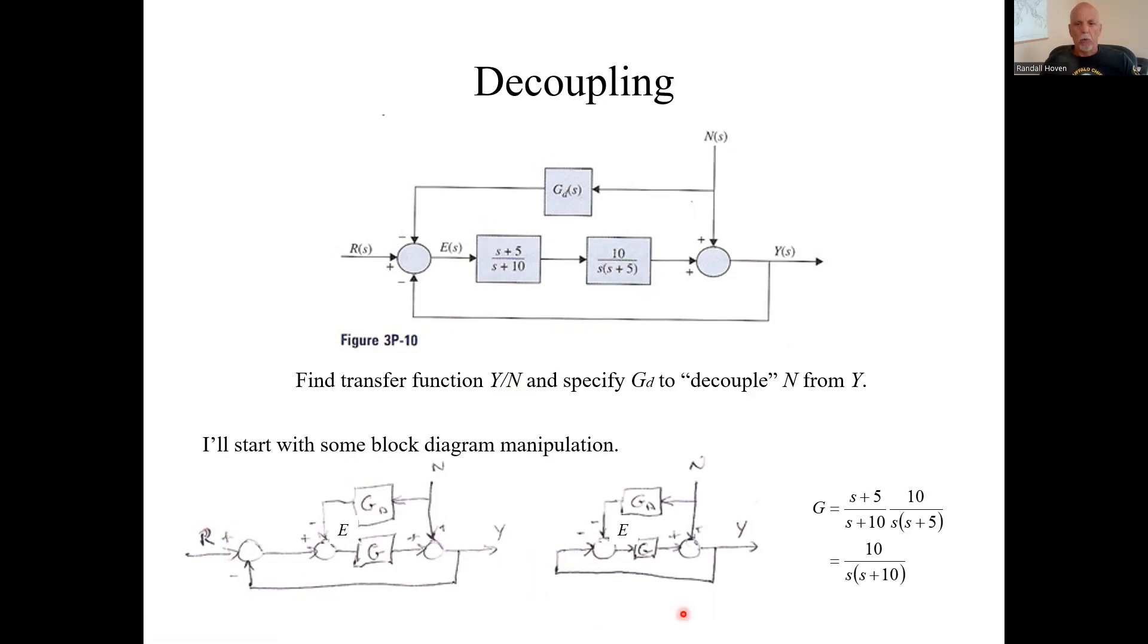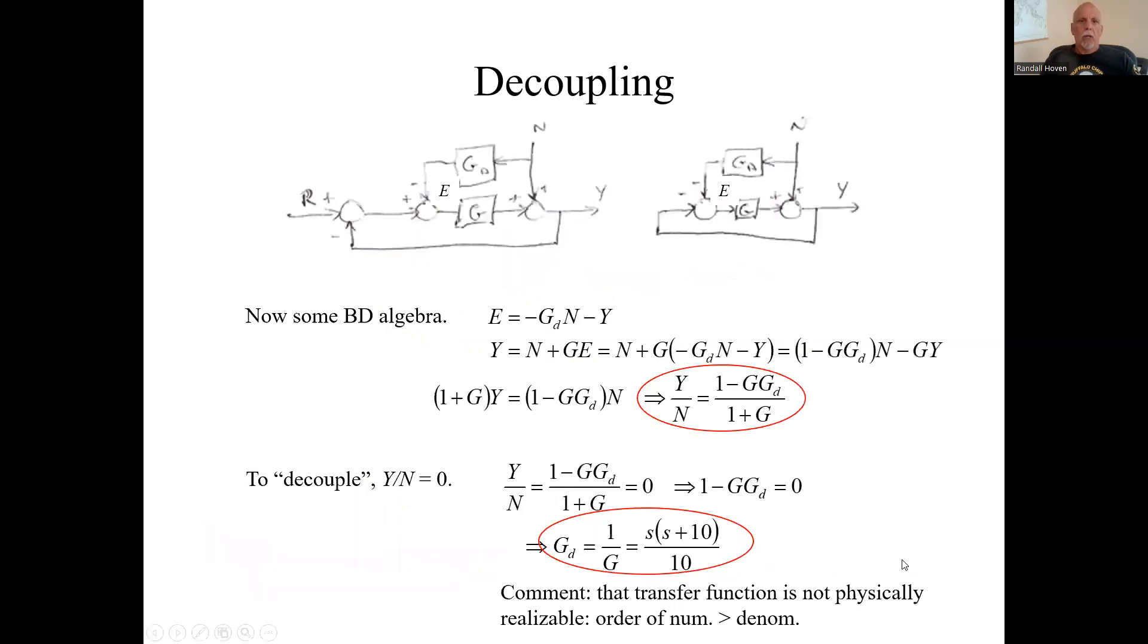Since we're interested in this transfer Y over N, we set R to zero, so we can get rid of this endpoint. Redraw it like this. Remember this G is these two guys multiplied together.